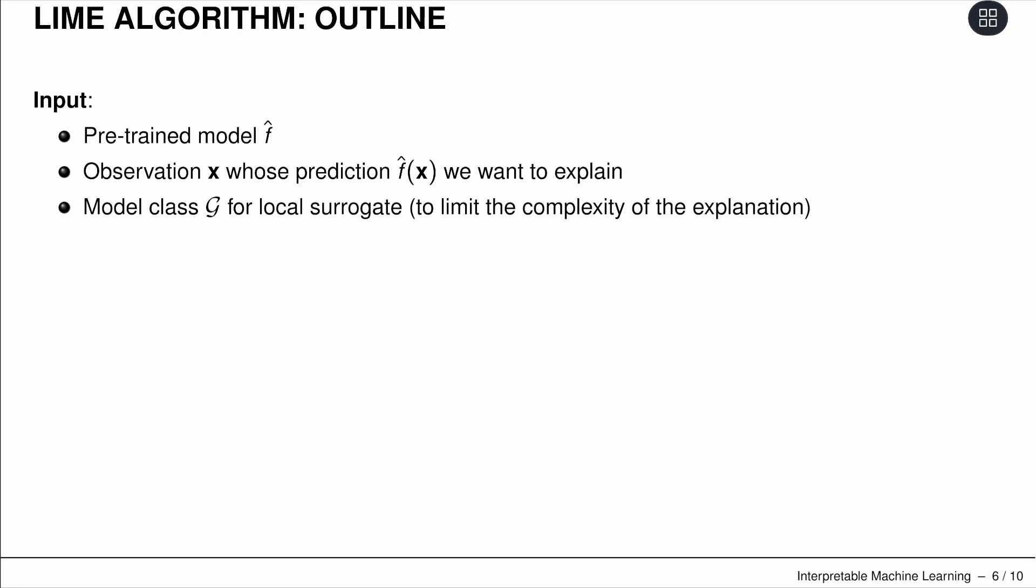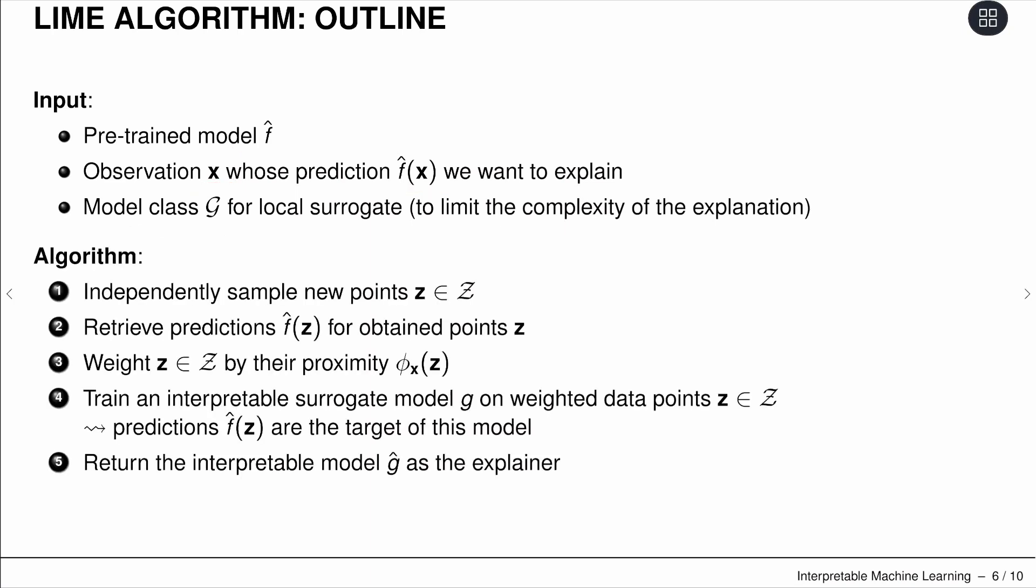Here's the algorithmic outline. As input, we have our original model F hat, the given observation—could be vector, tensor, image, whatnot—and the predictions. We also need, as input given by the user, the model class G. Could be, for example, a linear model or tree-based model.